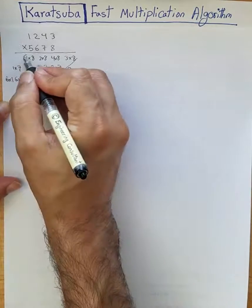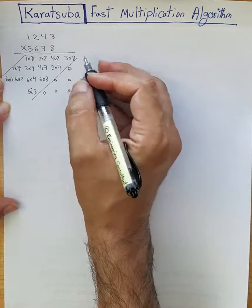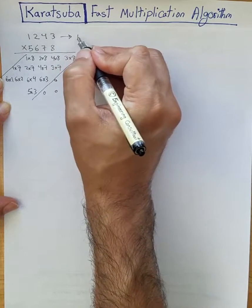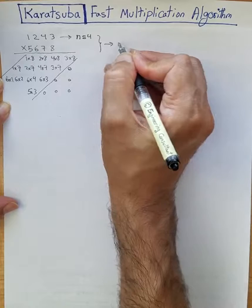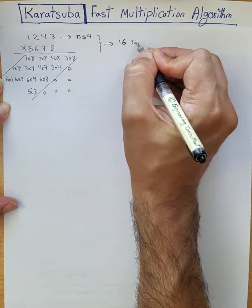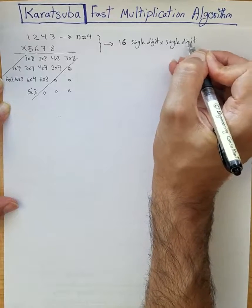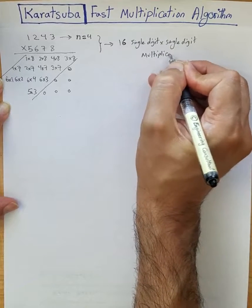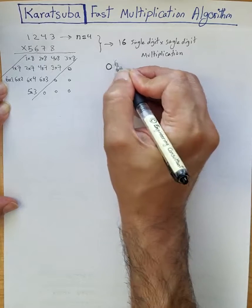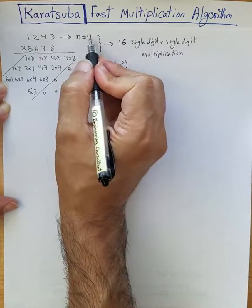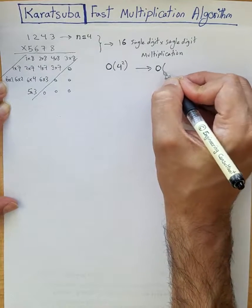So you can see that to achieve this you would need to deal with 16 single-digit multiplications. In this scenario, with a 4-digit by 4-digit multiplication, you require 16 single-digit by single-digit multiplications. The complexity of the traditional grade school multiplication algorithm is therefore 4 squared — 4 being the number of digits.